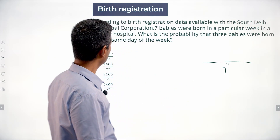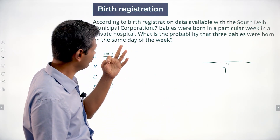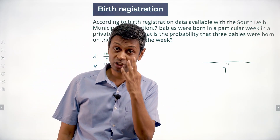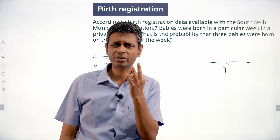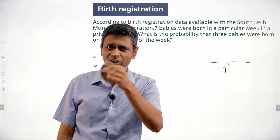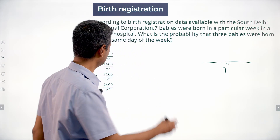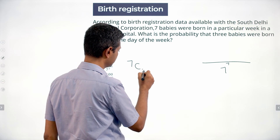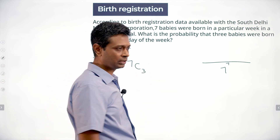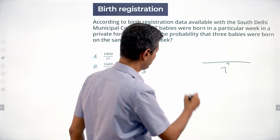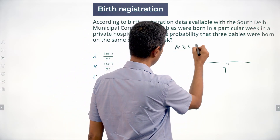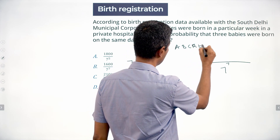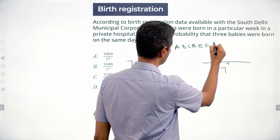Now the probability that 3 babies were born on the same day of the week — it is some 3 babies. Which 3? That gives us 7C3. If you have babies A, B, C, D, E, F, G, some 3 have to be selected.